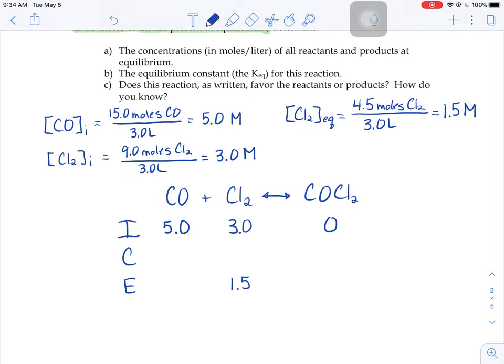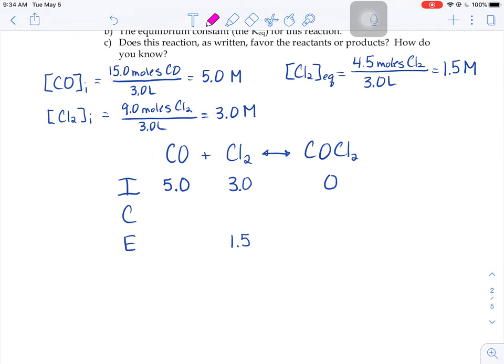This is all the information that we're told in the problem. And now the rest of the problem we have to figure out on our own. So I'm going to change colors just so you can see basically what information was provided for us versus what we have to solve for. So if C stands for the change in concentration, and if you look at that chlorine, it started with a value of 3 and ended with a value of 1.5.